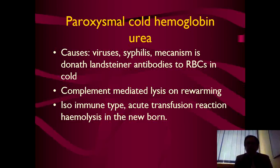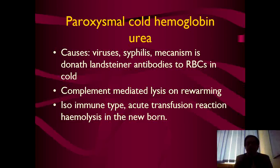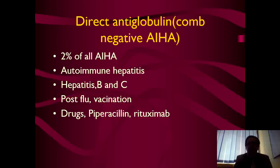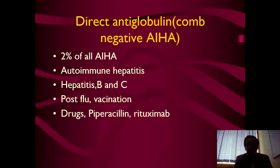Next is paroxysmal cold hemoglobinuria. Causes include viruses and syphilis. The mechanism involves Donath-Landsteiner antibodies to RBCs in cold weather; it is complement-mediated with lysis on rewarming. It is isoimmune type, and acute transfusion reaction hemolysis in the newborn is the classical example. Then there is DAT-negative autoimmune hemolytic anemia, comprising only 2% of all AIHA cases. Causes are autoimmune hepatitis, hepatitis B and C, post-flu vaccination, and drugs including piperacillin and rituximab.